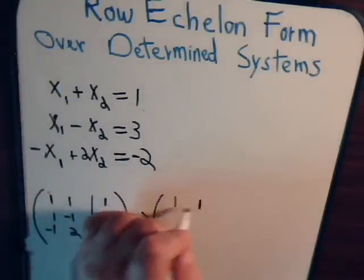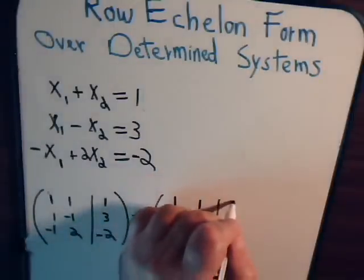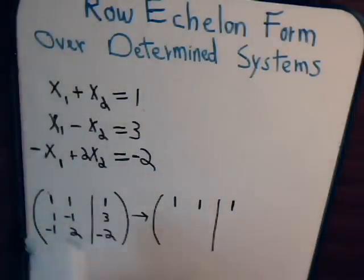1, 1, 1. We imagine multiplying this by negative 1 and then adding. So this is 0.